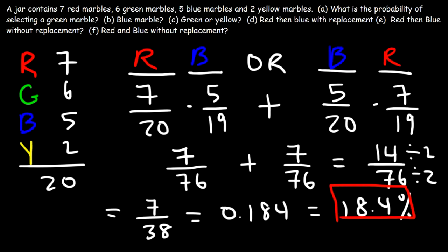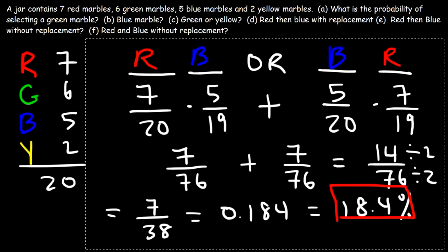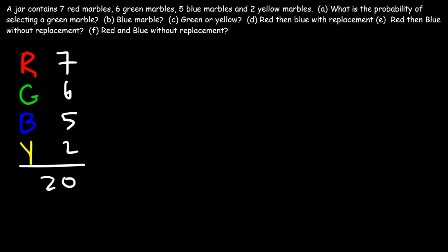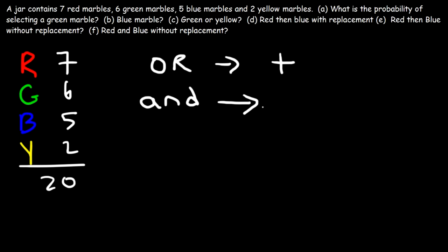The probability of not getting a red and a blue marble without replacement is 100 minus 18.4, which is 81.6%. Now let's review a few important details: any time you see the word OR, associate it with addition or sum. Whenever you see the word AND, associate it with multiplication.